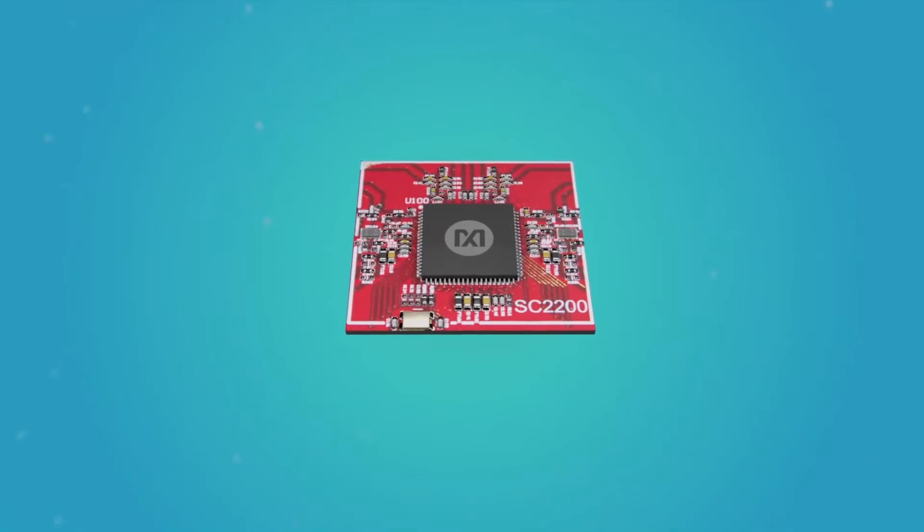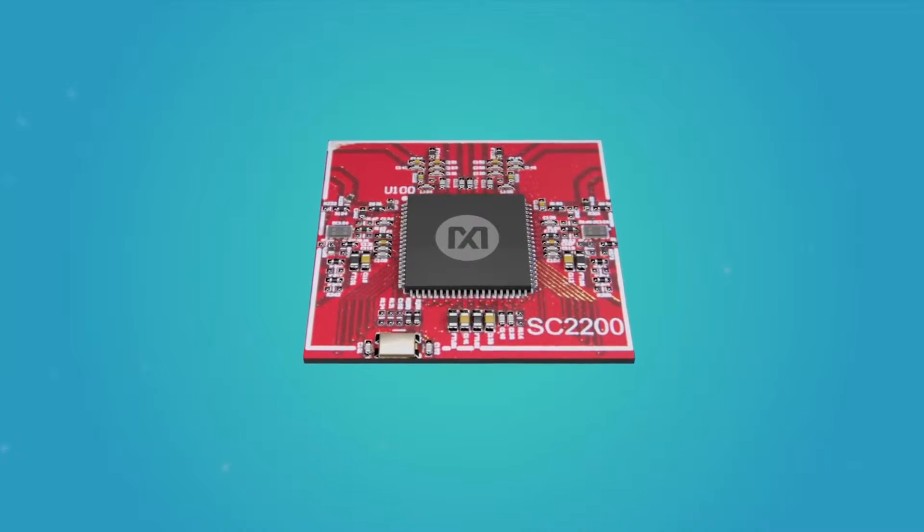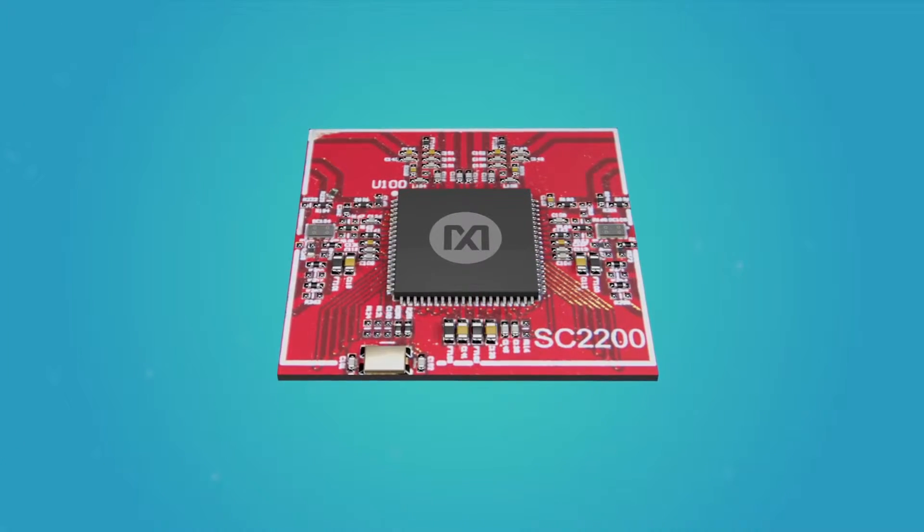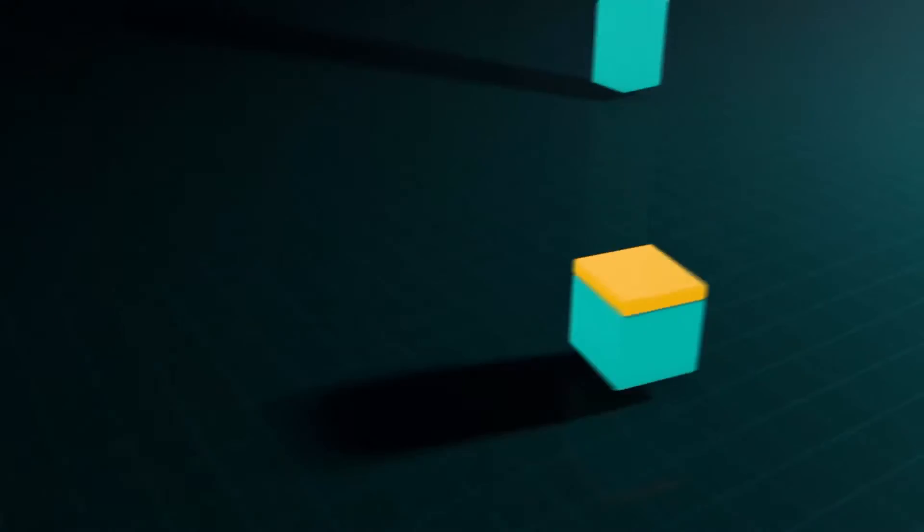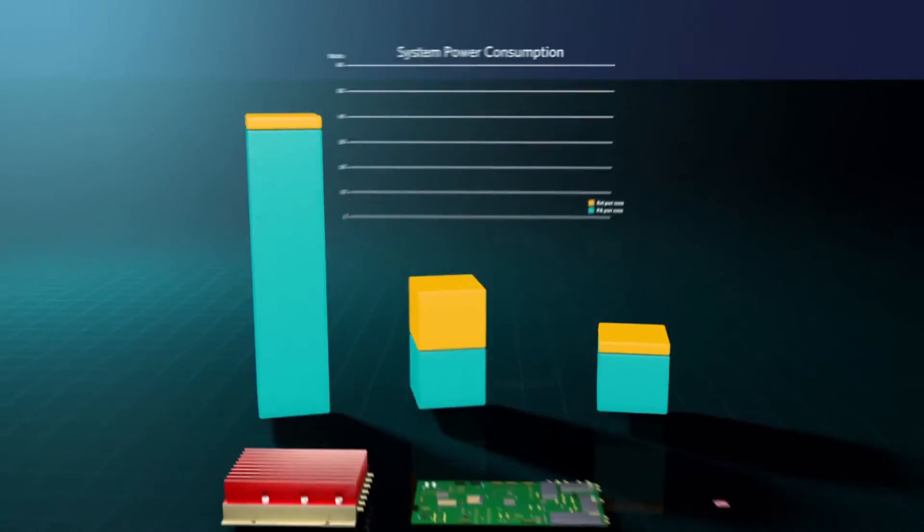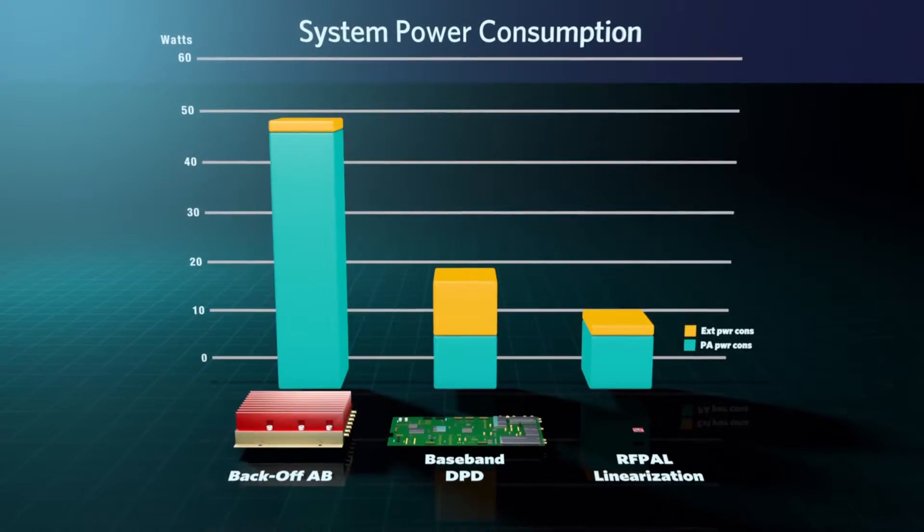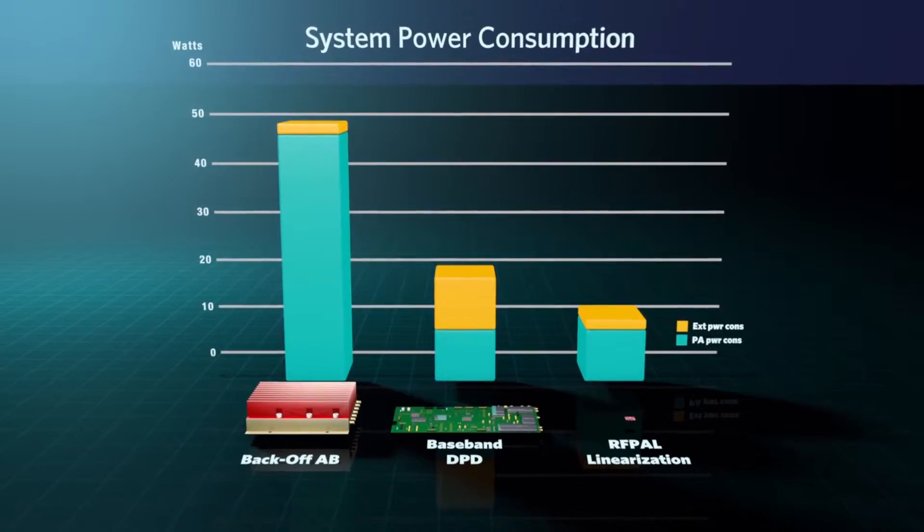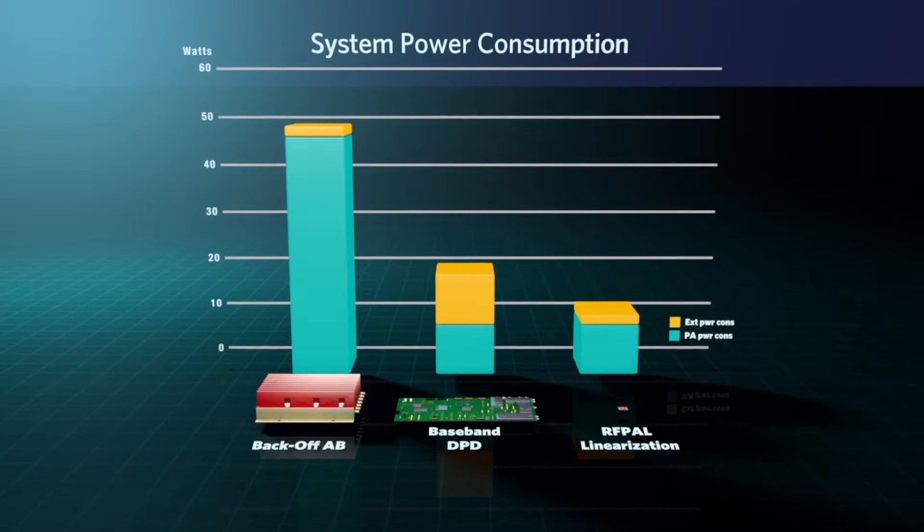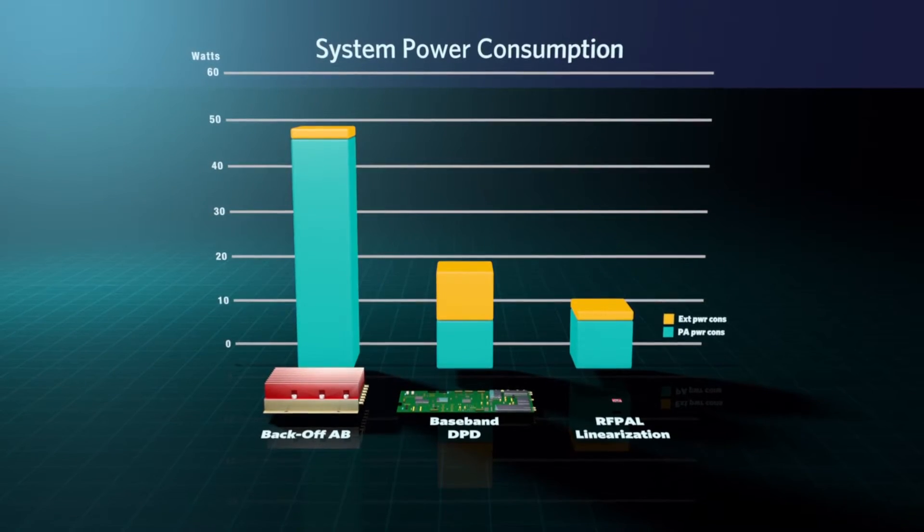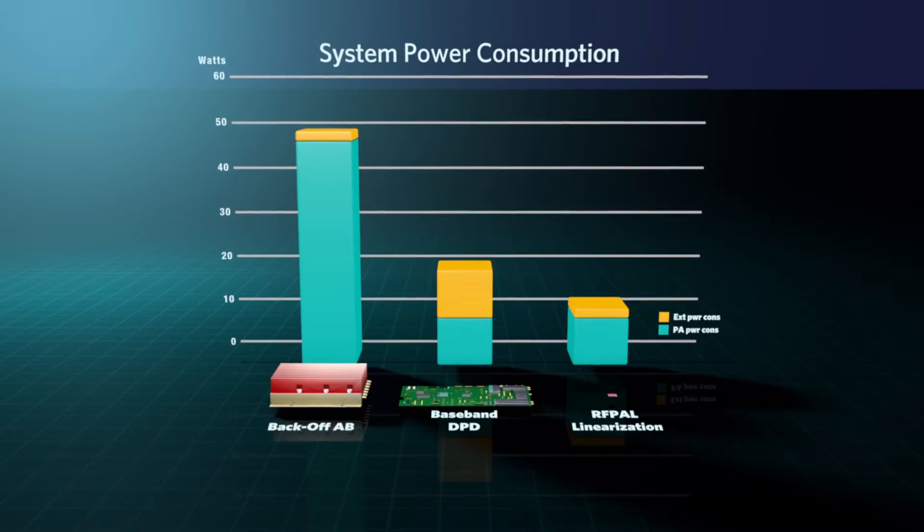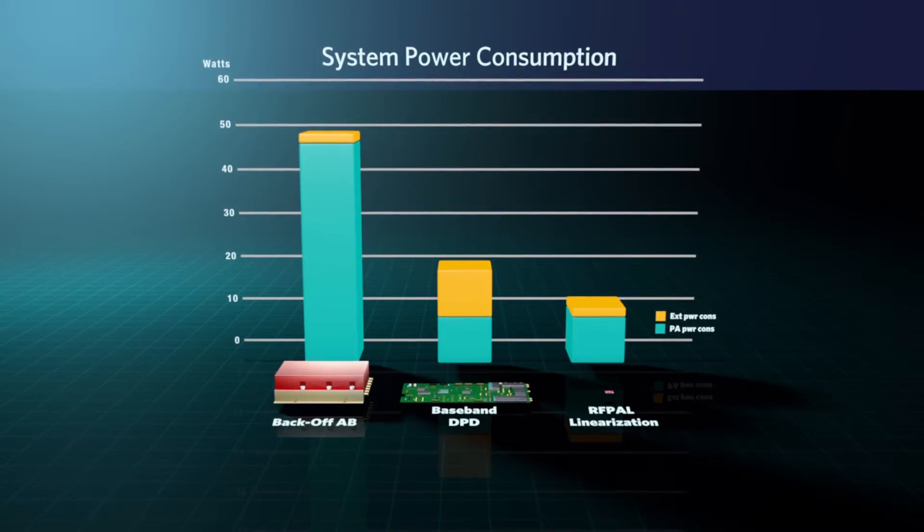It's no surprise that more and more customers are implementing Maxim's linearizers in their designs. This chart displays the power savings you can achieve with SC-2200 for a 5-watt system. Implementing Maxim's RFPA linearization technology ultimately results in a 33% reduction in system power consumption versus DPD and 69% versus back-off.